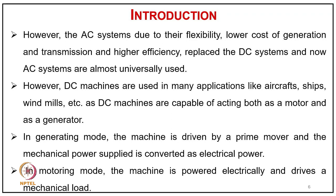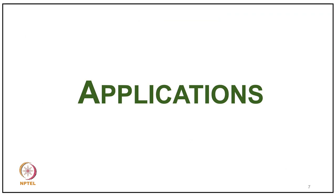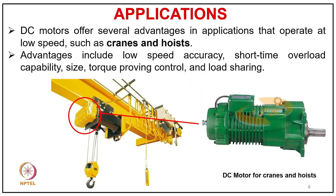In generating mode, the DC machine is driven by a prime mover and mechanical power is converted to electrical power. In motoring mode, the machine is powered electrically and drives a mechanical load. DC motors offer several advantages in applications: they operate at low speed such as in cranes and hoists, with advantages including low-speed accuracy, short-time overload capacity, size, and torque control.